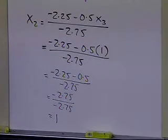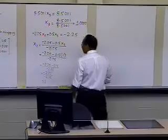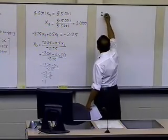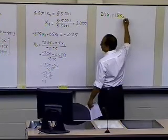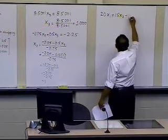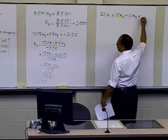That's what I get as the value of x2. Now let's go ahead and see what x1 is. That will be obtained from the third last equation, which in this case is the first equation. So I get 20 x1 plus 15 x2 plus 10 x3 equals 45.